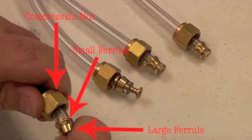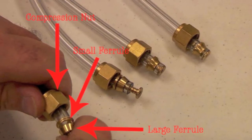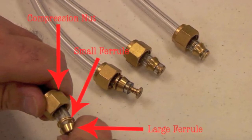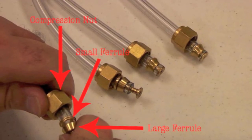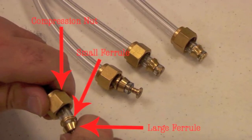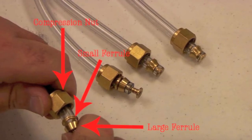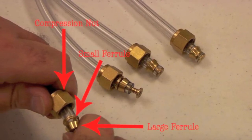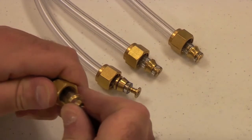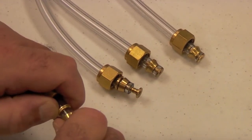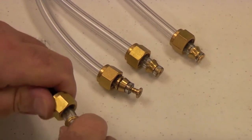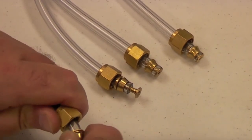The Swagelok compression fittings should be assembled on each cut tube end for connection to the electric solenoid valves. The order of the three-piece Swagelok fitting assembly is as follows: 3/8 inch compression nut, small ferrule, and large ferrule. Note that both ferrules should be placed with the smaller diameter facing the end of the cut tube. Push the three pieces a quarter of an inch onto the tubing.